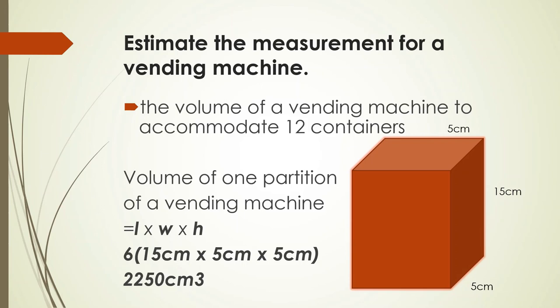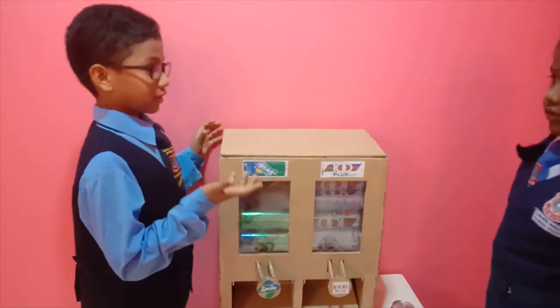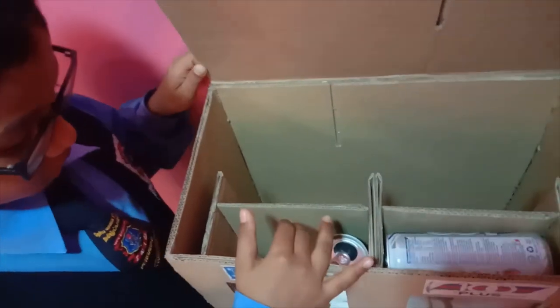The volume of a vending machine must be larger than the exact measurement of 12 containers. If the volume is smaller, we can't insert the container. The container could get stuck in the vending machine.